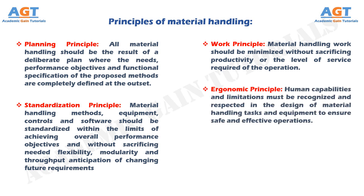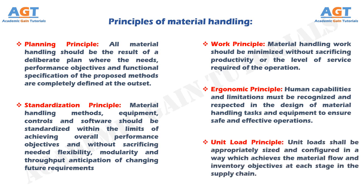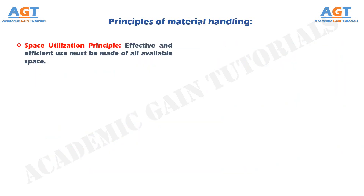The ergonomic principle: human capabilities and limitations must be recognized and respected in the design of material handling tasks and equipment to ensure safe and effective operations. The unit load principle: unit loads shall be appropriately sized and configured in a way which achieves the material flow and inventory objectives at each stage in the supply chain. The space utilization principle: effective and efficient use must be made of all available space.